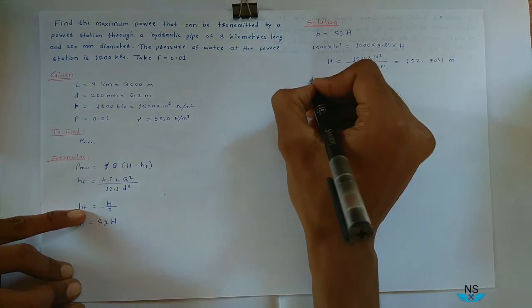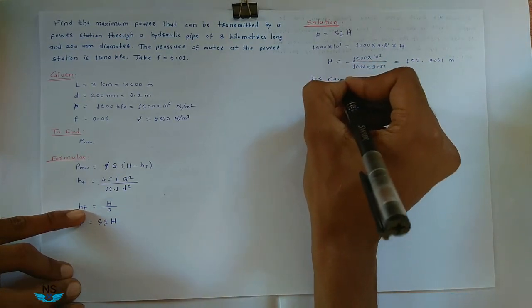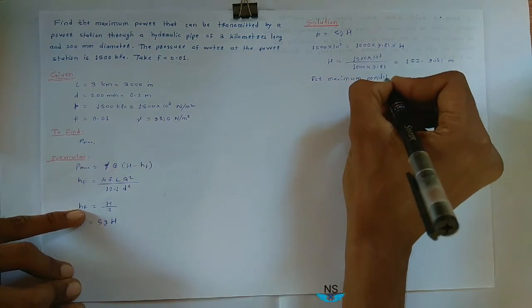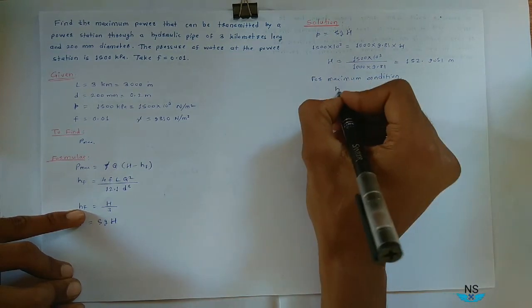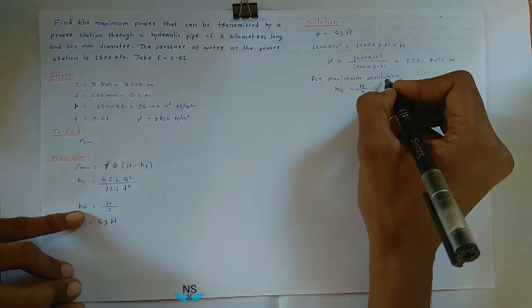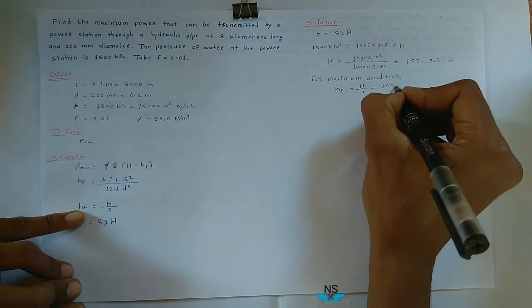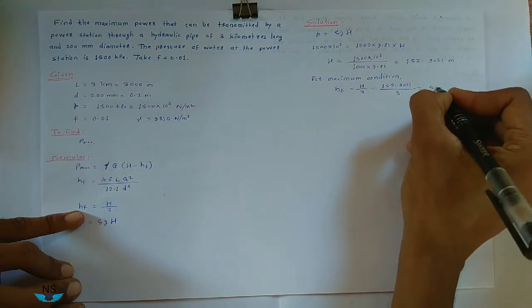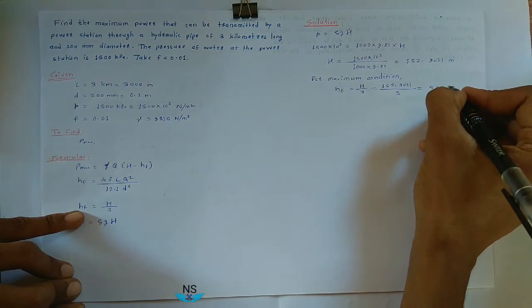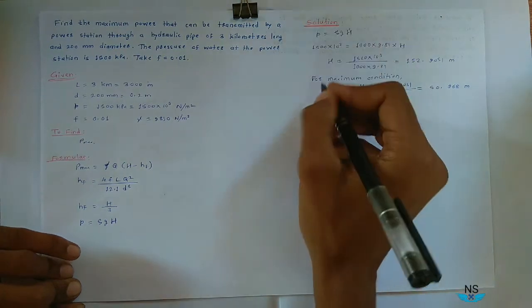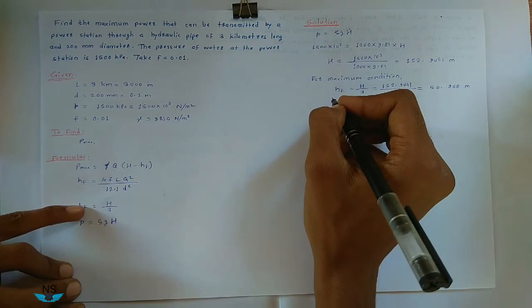After that, for maximum power condition, HF is equal to H divided by 3, that is 152.9051 divided by 3. It becomes 50.968 meter.